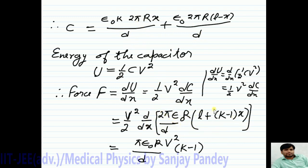Now, differentiating this step with respect to X we get pi epsilon naught R into V square upon D. Differentiation of L is 0 and differentiation of X with respect to X is 1. So, here is K minus 1. This is the required force on dielectric medium.